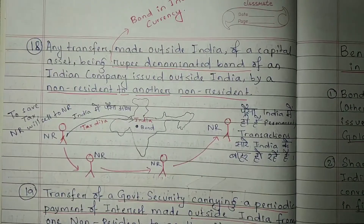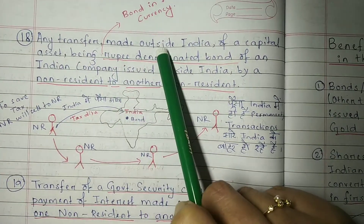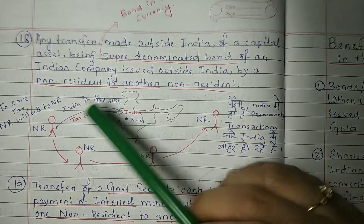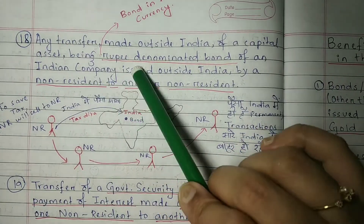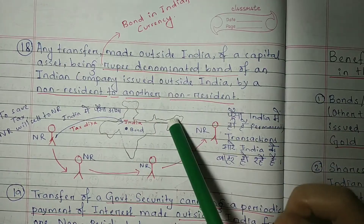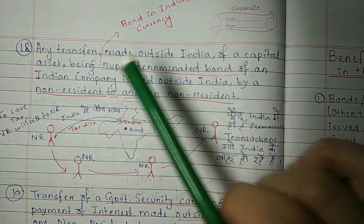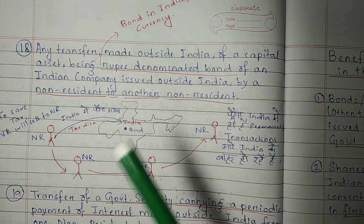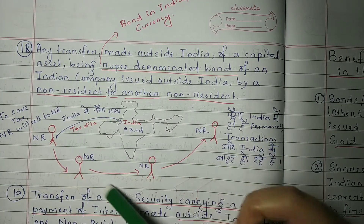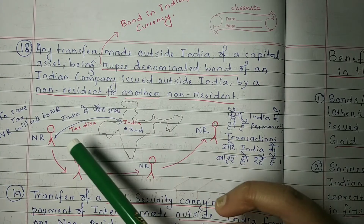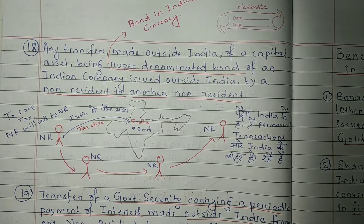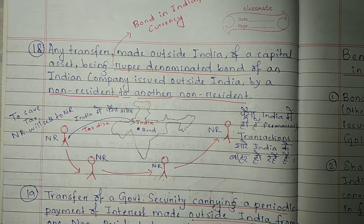Point number 18 says: any transfer made outside India of a capital asset — any transfer of a capital asset which is happening outside India — being a rupee denominated bond. A rupee denominated bond means any bond which is in Indian currency. It is a rupee denominated bond of any Indian company issued outside India. If that bond is transferred from one non-resident to another non-resident, then we do not regard it as a transfer for capital gains purposes.